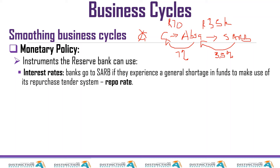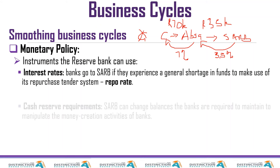ABSA takes the 1 million and the 70,000 rand, keeps 35,000 rand as profit, and passes 1 million 35,000 to the SARB as repayment of the loan. It's not rocket science — it's simple.